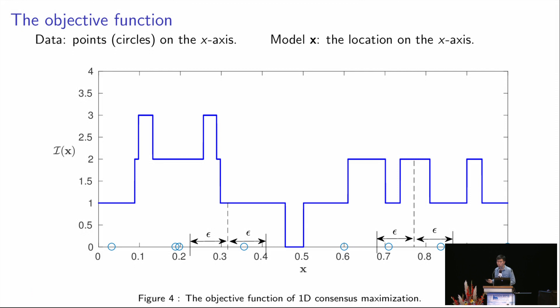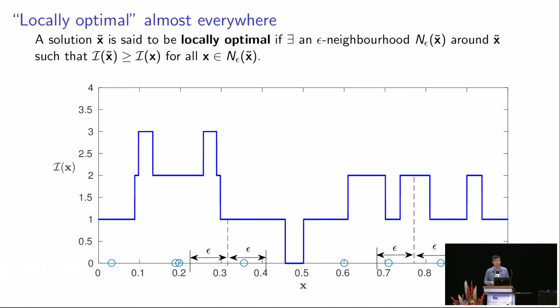This not only makes the objective function non-convex and non-continuous, but it also makes locally optimal solutions exist almost everywhere. This makes it hard to follow the gradient to improve the quality of any initial solution.